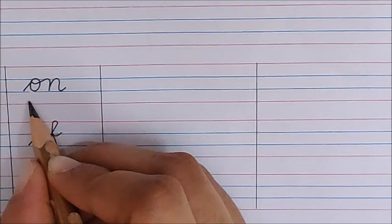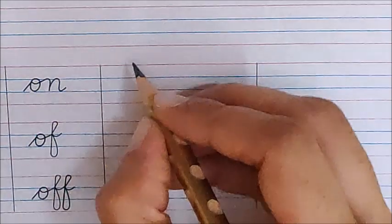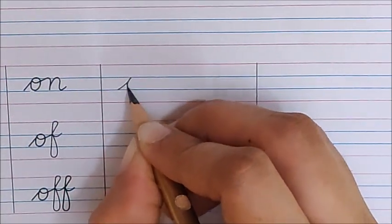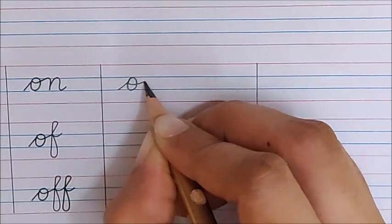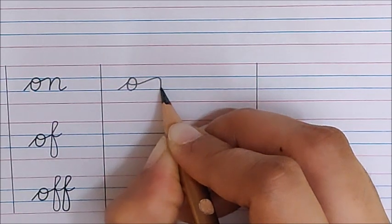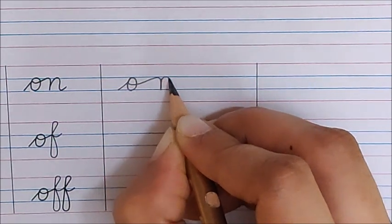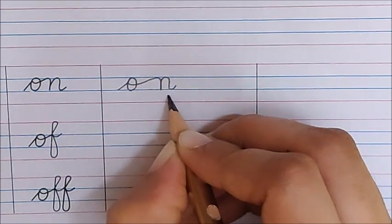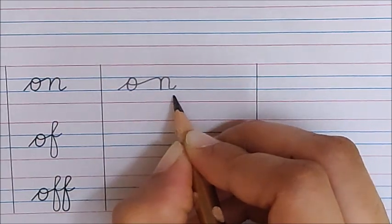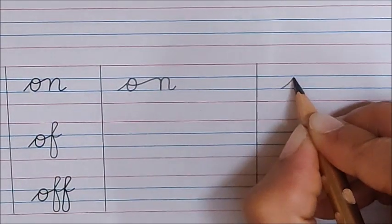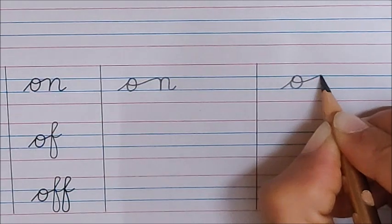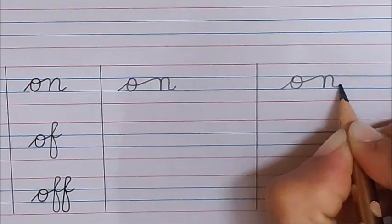On. O, take the hand up, go down, up, down, and a tail. Then, na. On, na, on. O, na, on.